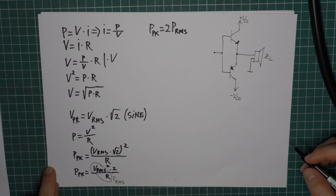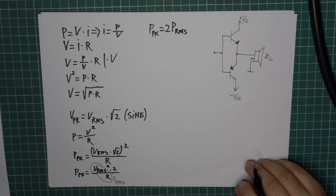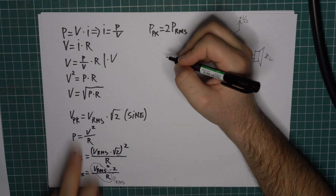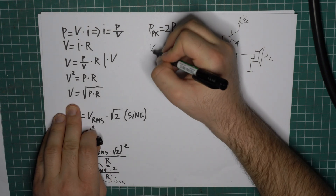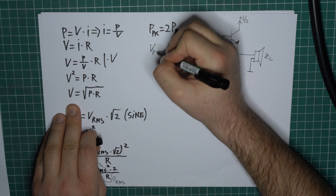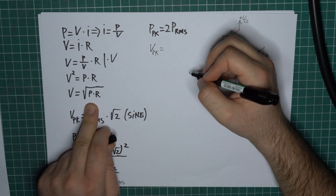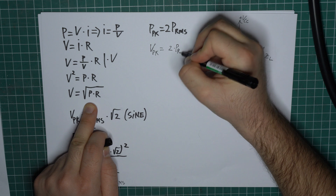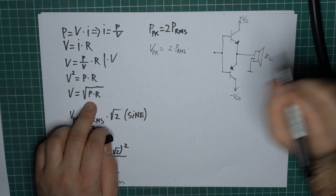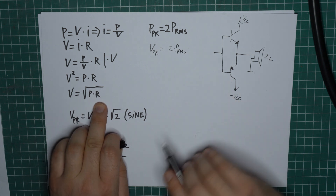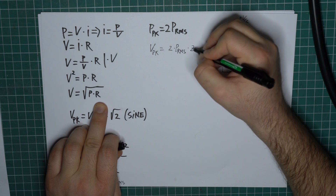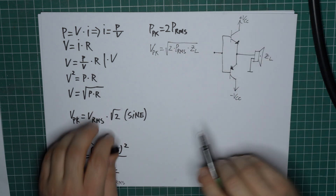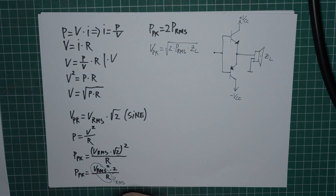Now to answer our initial question, we need to express peak voltage in terms of RMS power. Going back to the formula V = sqrt(P × R), we substitute peak power — which is 2 times RMS power — and replace resistance with the speaker impedance Z_L. So the final formula is: V_peak = sqrt(2 × P_rms × Z_L). Let's now do a practical example and see how this applies to an amplifier.